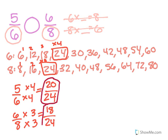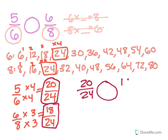So I have my new equivalent fractions — sorry, not factors. And they each match with these ones up here, so now I can compare. I have 20 twenty-fourths, and I'm comparing with 18 twenty-fourths. 20 is bigger than 18. So that means 5 sixths in the end was bigger than 6 eighths.